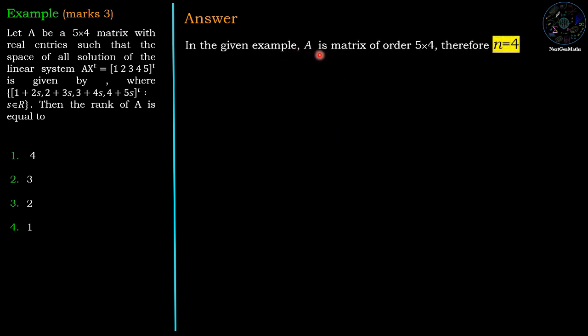Now in the given example, the given matrix is of order 5 cross 4, therefore the number of columns in A is 4, so n equals 4.